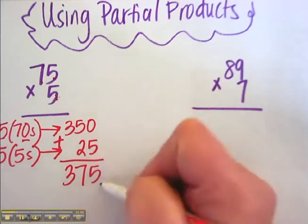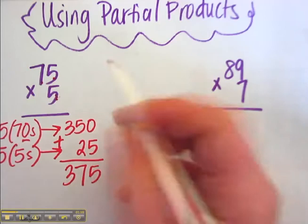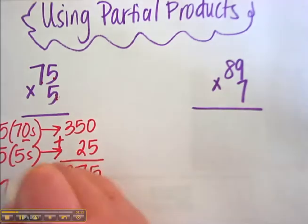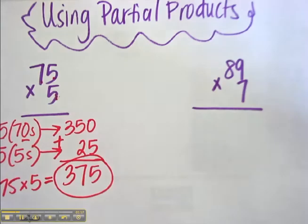And 0 plus 5 is 5. 5 plus 2 is 7. 3 is 300. So that is your answer 75 times 5 equals 375. Piece of cake.